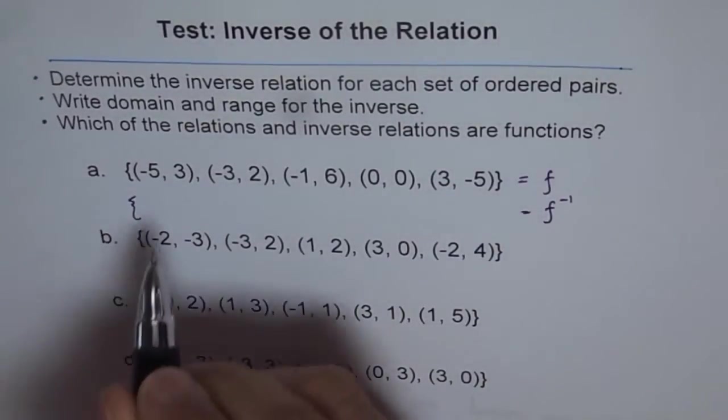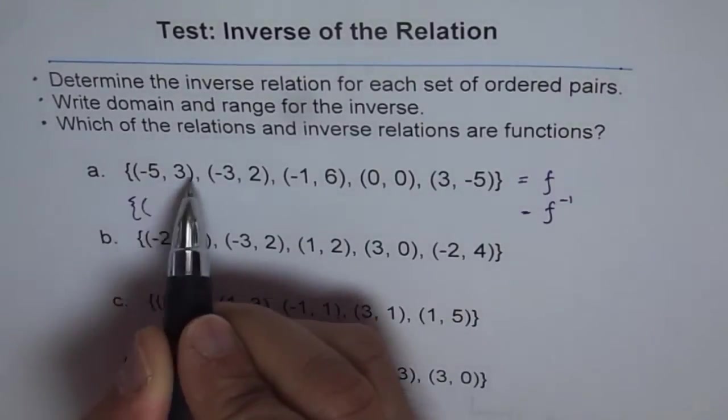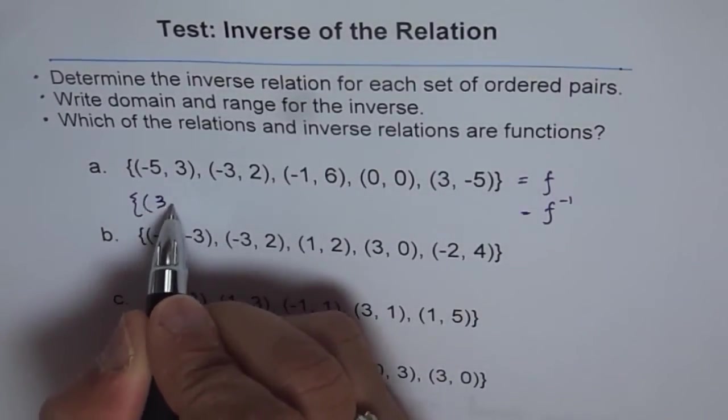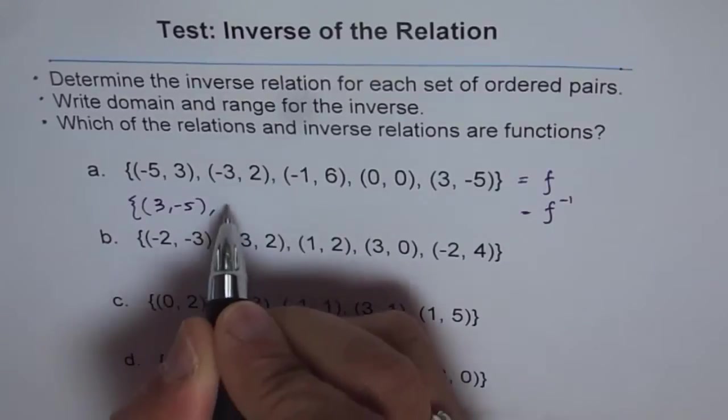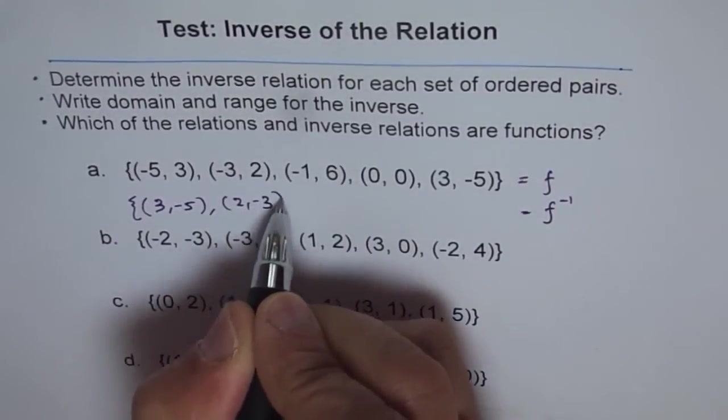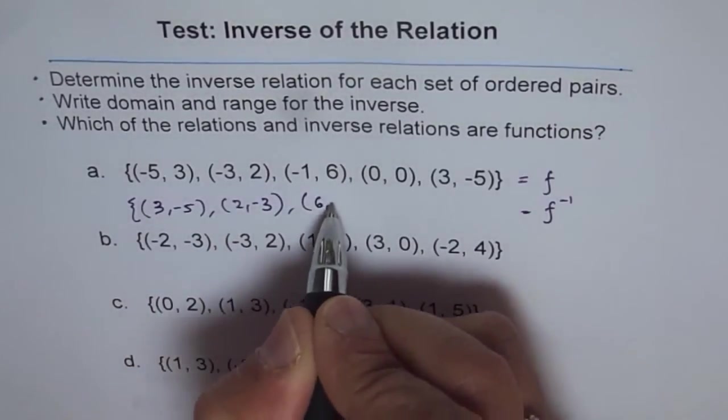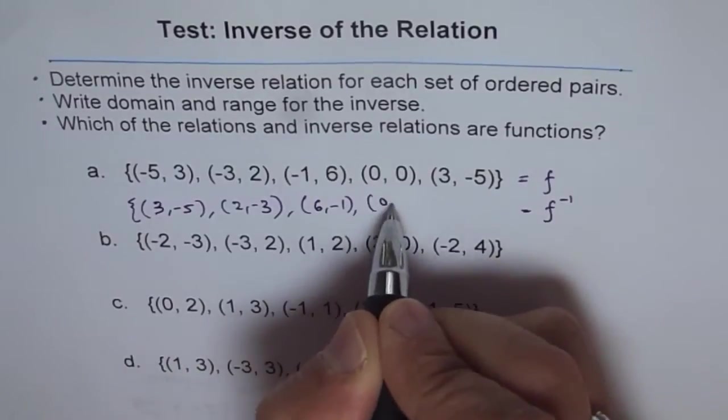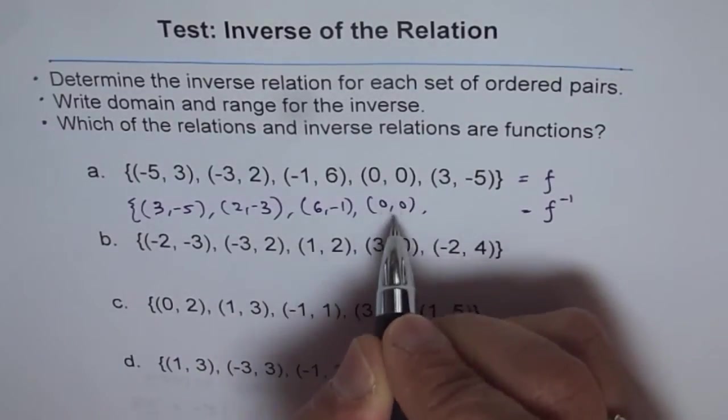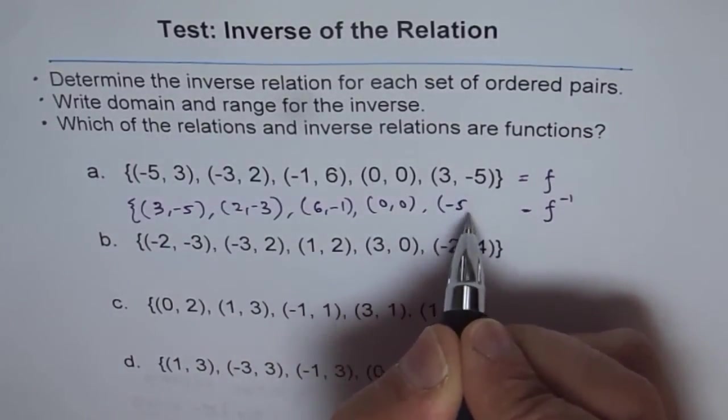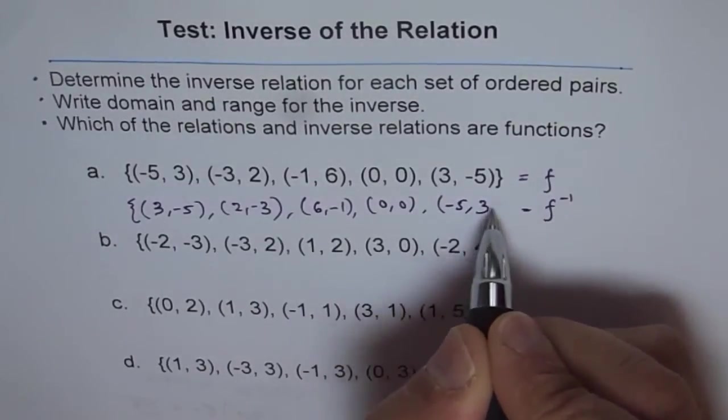We will just swap x and y and we can write this as (3, -5) and this will become (2, -3) and this will be (6, -1), (0, 0). So these points are invariant points. They are same on function as well as in inverse.